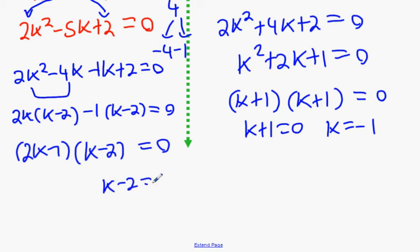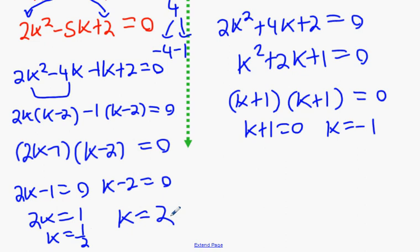k, minus 2, equals 0. k minus 2 equals 0. And 2k minus 1 equals 0. 2k equals 1. k equals 1/2. k equals 2. And there's your answer.